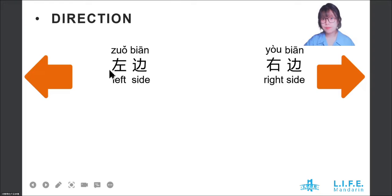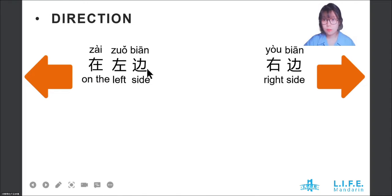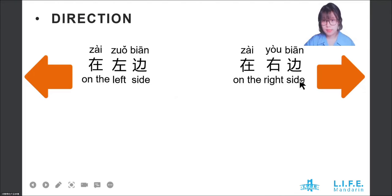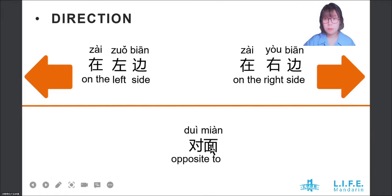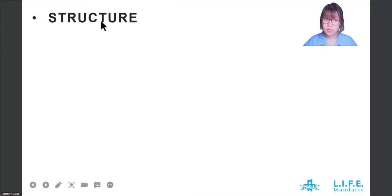左边, 右边. 在左边 means on the left side, and 在右边 means on the right side. There is one more word to describe direction: 对面, which means opposite/across from.